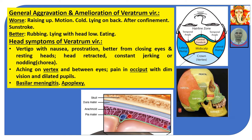Vertigo with nausea and prostration — better from closing eyes and resting head. Head retracted. Constant jerking or nodding — some sort of chorea, which is involuntary motion of various parts of the body. Aching on vertex between the eyes. Pain in occiput with dim vision and dilated pupils. Basilar meningitis, apoplexy.